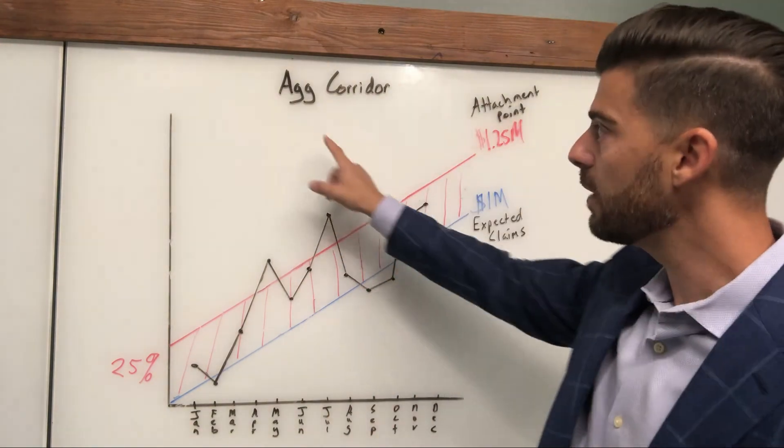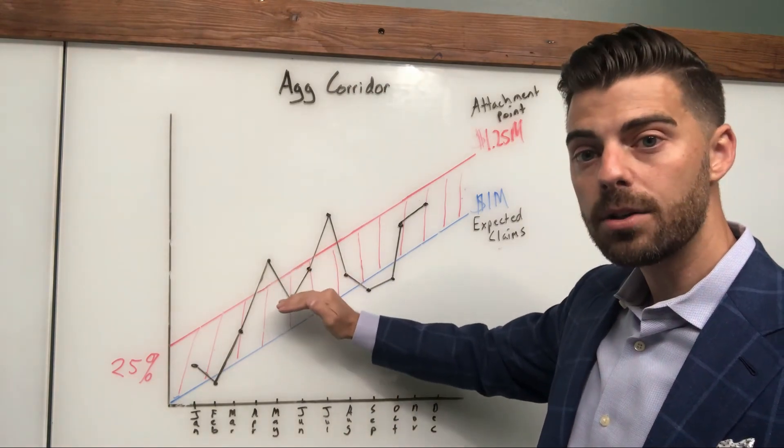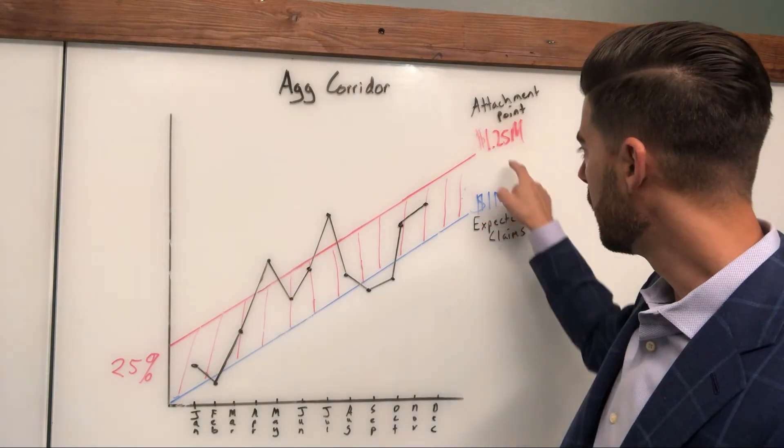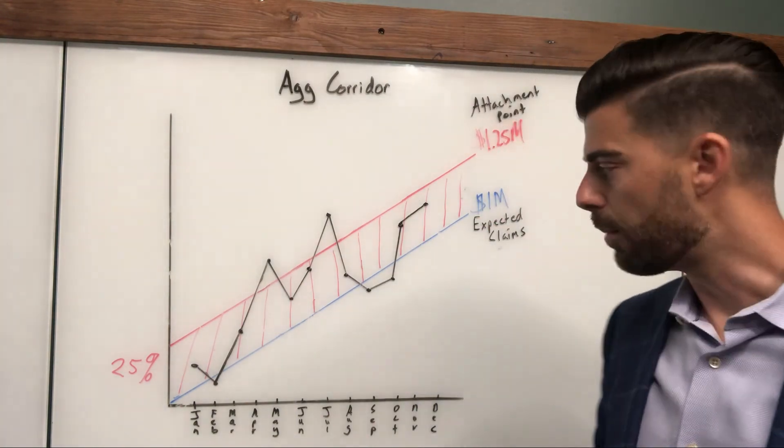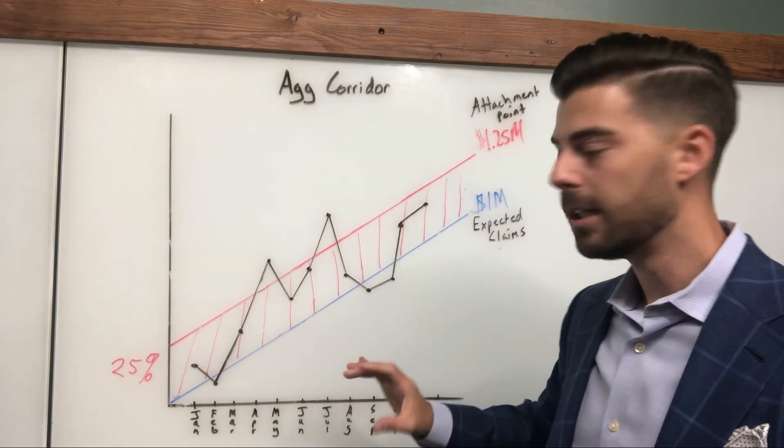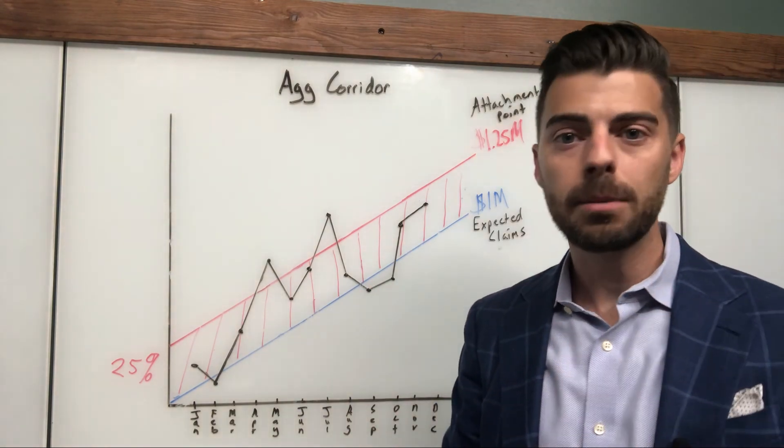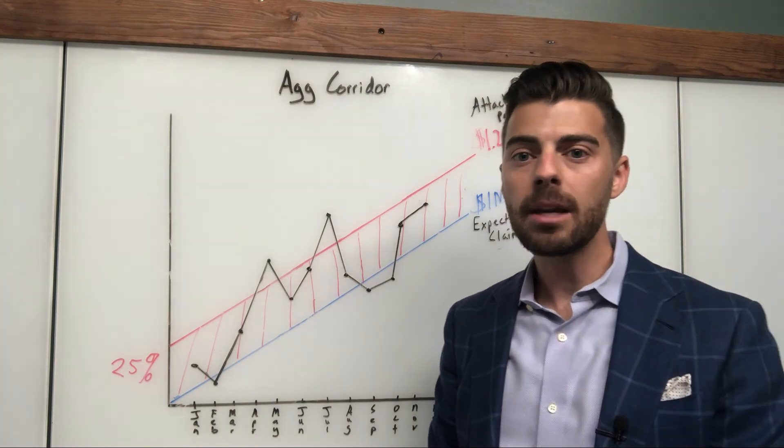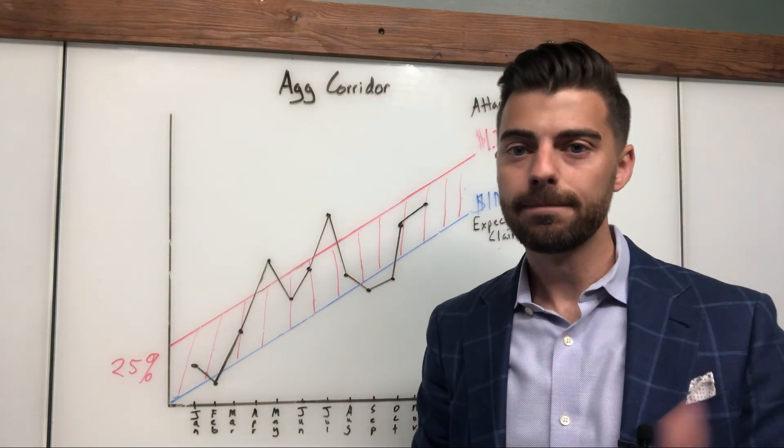But in summation, this is the aggregate corridor. This is the buffer that underwriters use to predict the attachment point, which is based off an expected claims number. I hope that helps. I hope that stimulated some questions. Maybe I didn't explain something thoroughly enough. You let me know in the comments below. Always good to see you. Thanks for watching. See you next time.